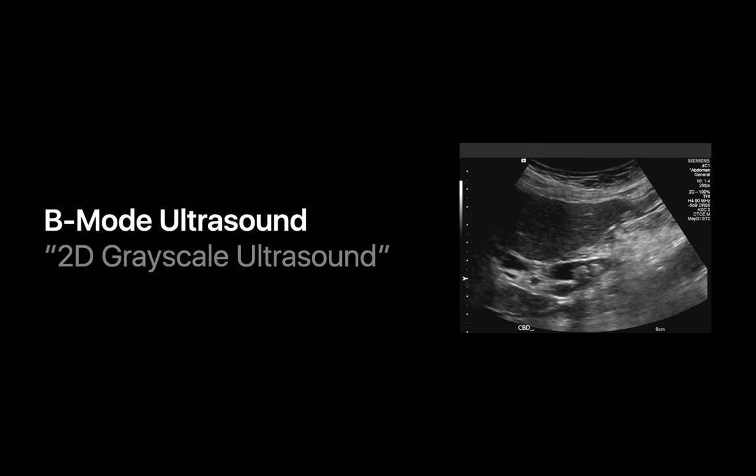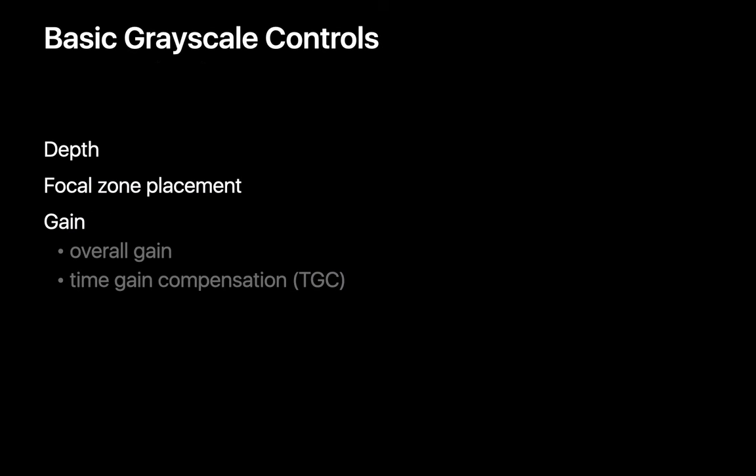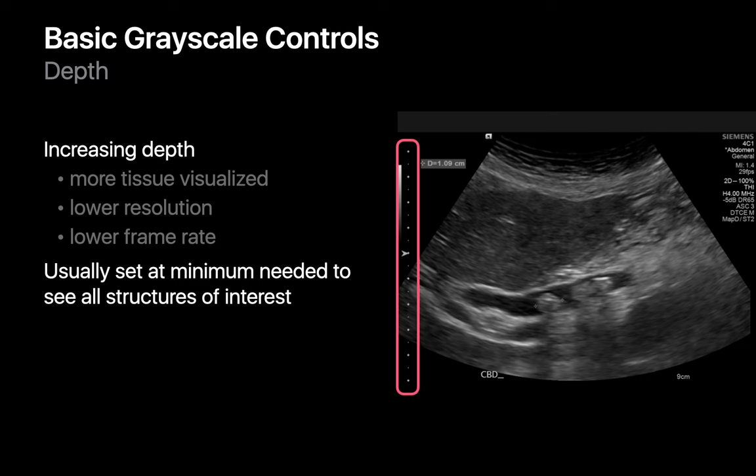When performing a 2D grayscale ultrasound study, there are three parameters you need to control: depth, focal zone placement, and gain. The depth of an ultrasound image is adjustable but requires balancing costs and benefits. Increasing image depth allows you to visualize more tissue, but comes with an image resolution and frame rate penalty. Therefore, depth is usually set to the minimum needed. Image depth is displayed as vertical gradations along either side of the image, usually with half-centimeter marks.